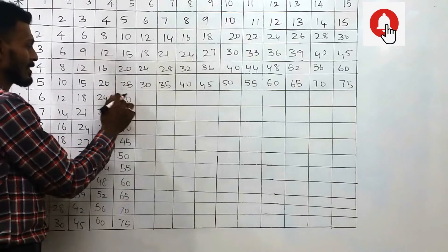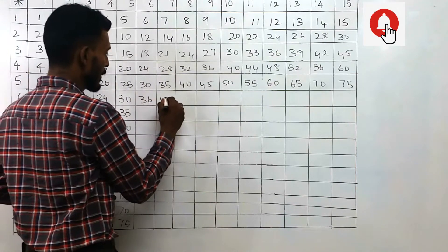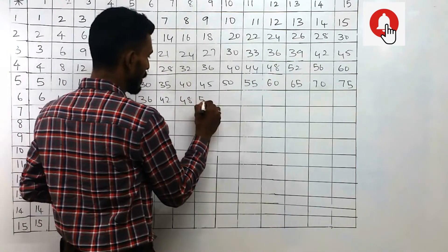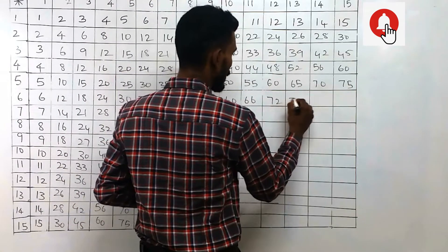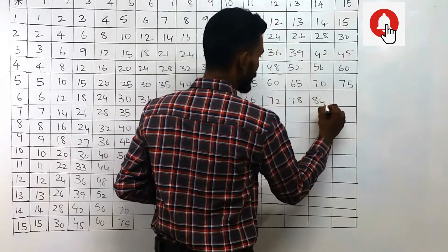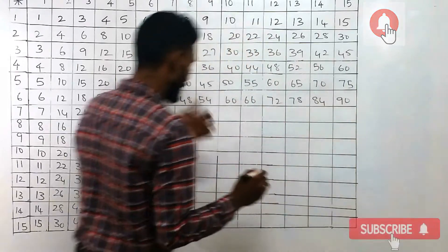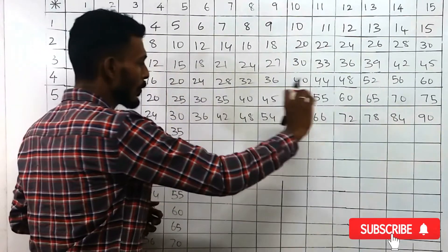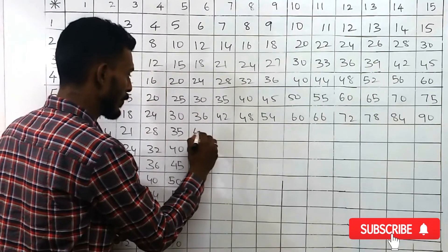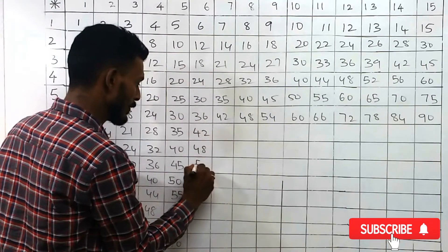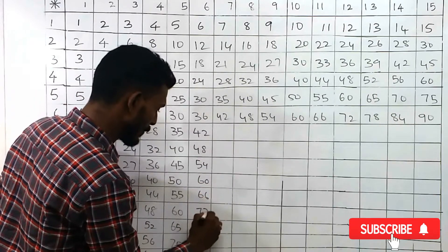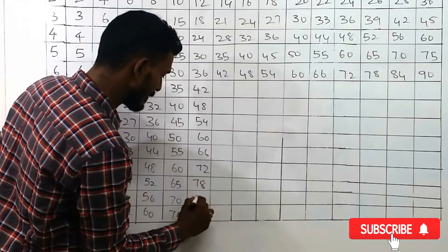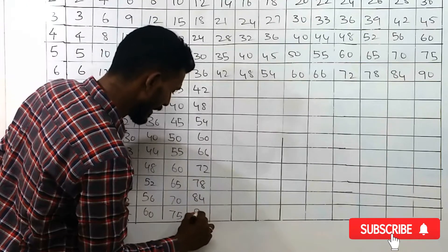In the 6th row, we have to add 6 to the previous number: that is 36, 42, 48, 54, 60, 66, 72, 78, 84, and 90. Write down whatever we are writing in the row in the column as well: 42, 48, 54, 60, 66, 72, 78, 84, and 90.